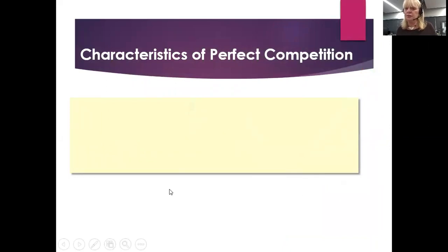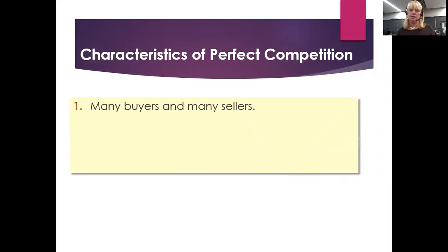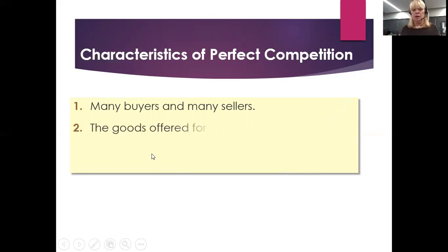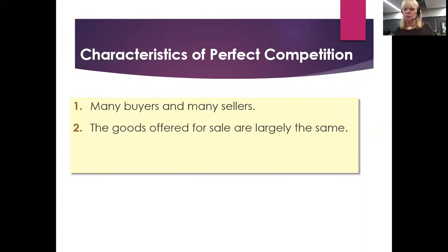For this class we focus on perfect competition. Its characteristics: many buyers and many sellers — not hundreds or thousands, but millions, like everyone who grows or buys wheat worldwide. The goods offered for sale are identical. Wheat is wheat is wheat — you can't distinguish wheat grown here from wheat grown in China. It's all thrown together on the wheat market with no distinguishing.